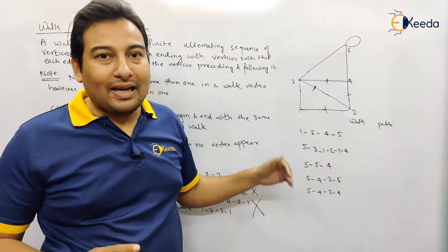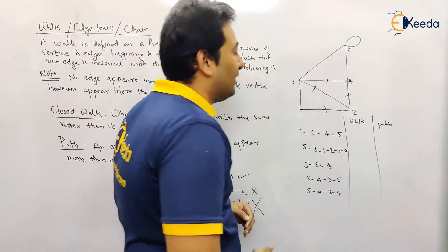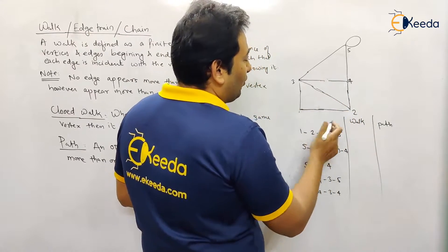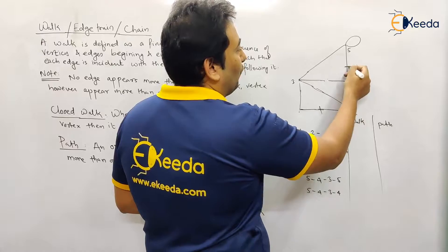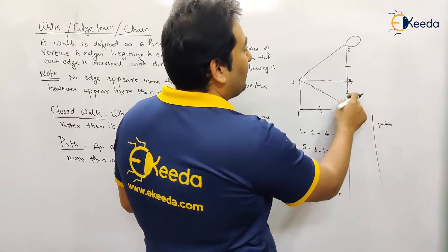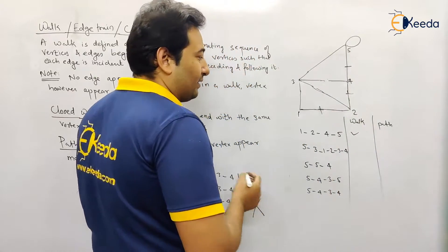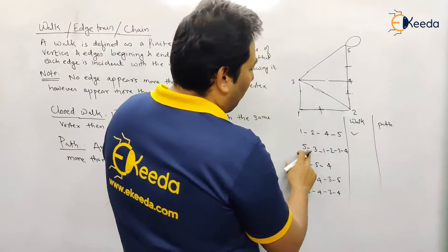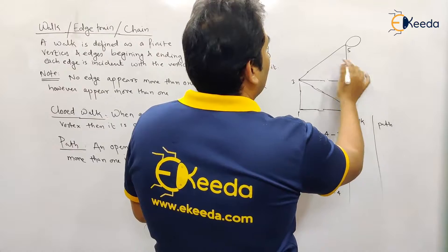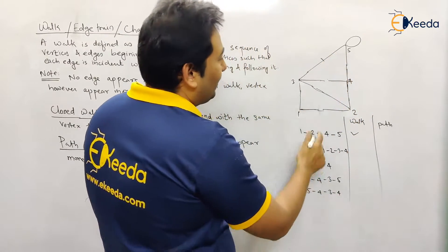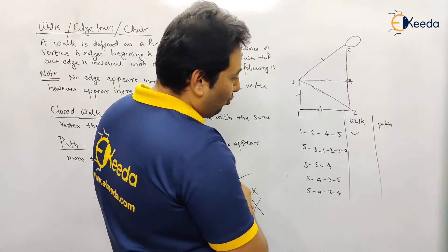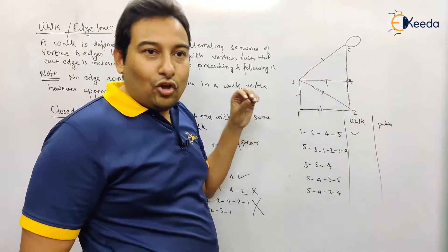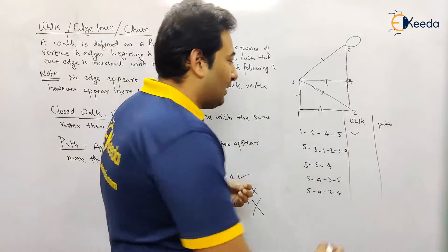Now let us consider a new example graph and identify walks and paths. The traversal 1-2-4-5: all edges are visited once, so it's a walk. Next traversal: 5-3-1-2-3-4. Let's check — no edge is visited more than once, therefore it's also a walk. Both of these are open walks because the starting and ending vertices are different.